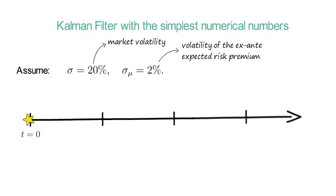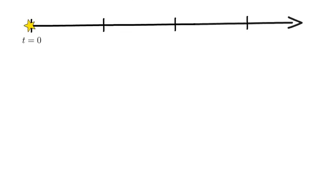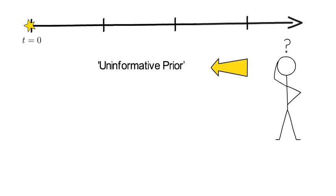Now in t equals zero the investor needs to start with a view on the value of the current ex-ante risk premium. Now I assume the investor has just no clue. Mathematically the investor translates that into what is called an uninformative prior which I specify as follows: μ_1 conditional on F_0 is assumed to follow a Gaussian distribution centered around 5% with a variance of e to the 12.